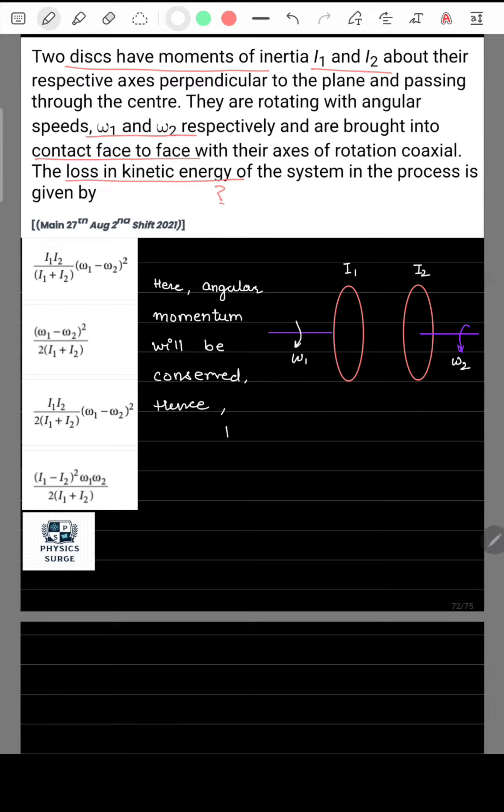So here, as we know, angular momentum will be conserved. Hence, we can write the equation i1 omega 1 plus i2 omega 2 equal to i dash omega dash. Here, i dash is the combined moment of inertia will be i1 plus i2 and omega dash is the combined angular speed of the two disks after coming in contact.